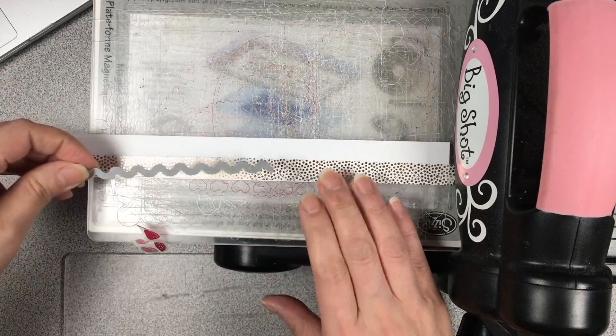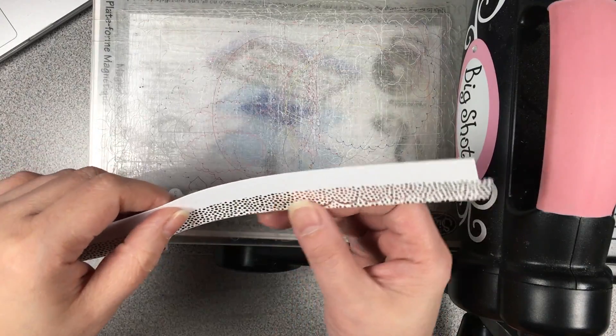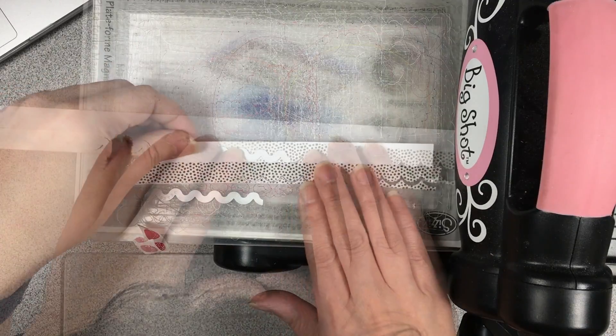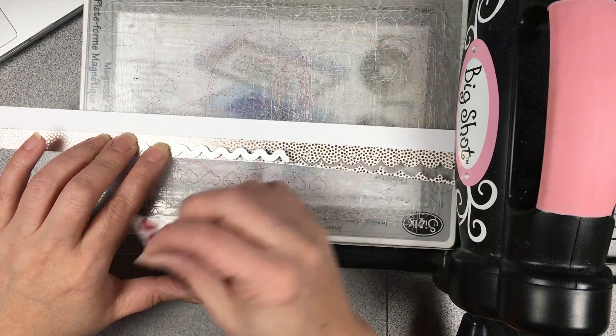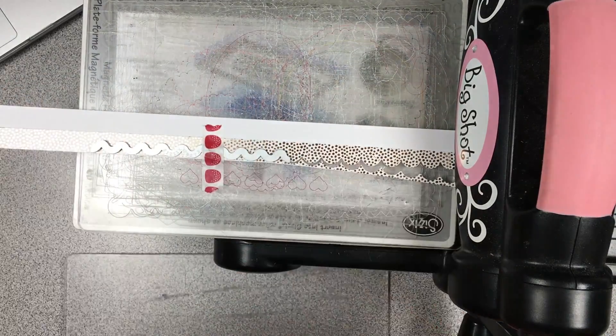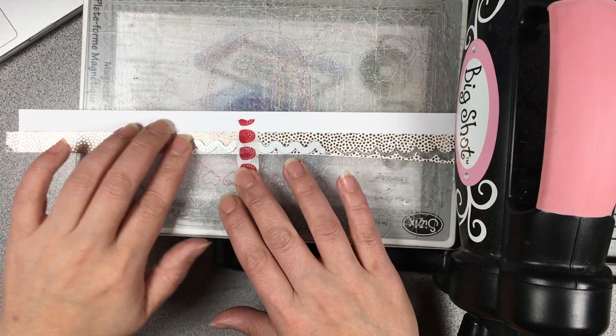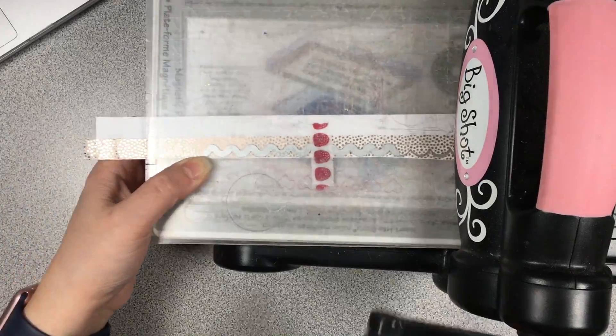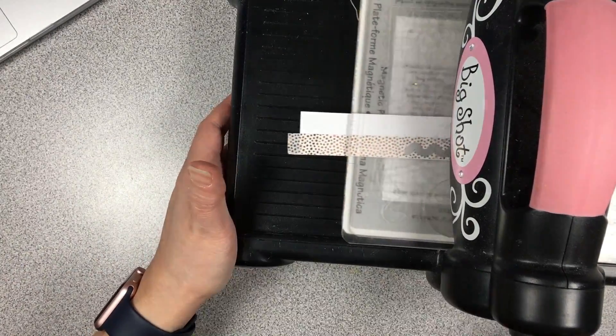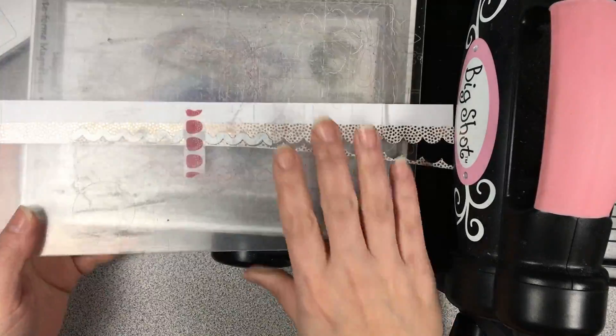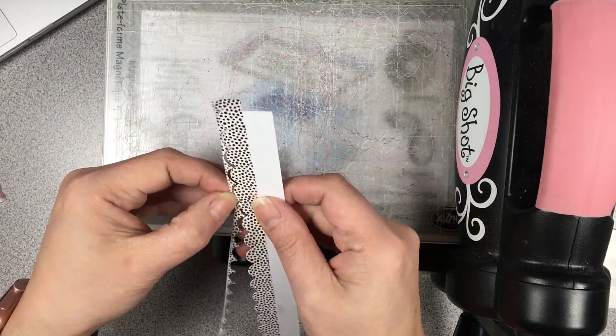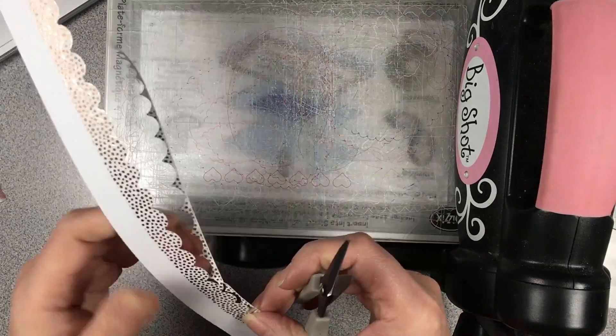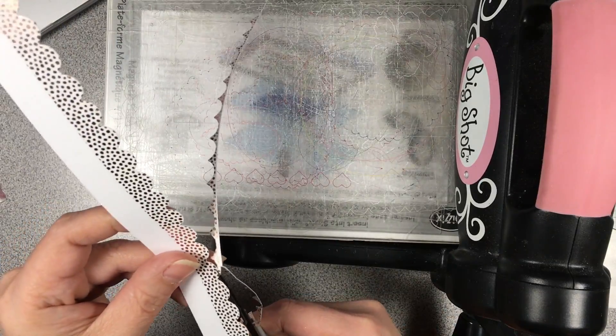Die cut that a few more times until you reach the end, and trim off any bits to clean up the scallop piece.